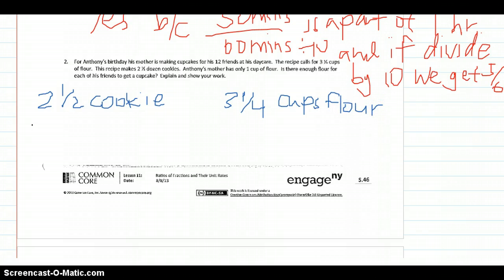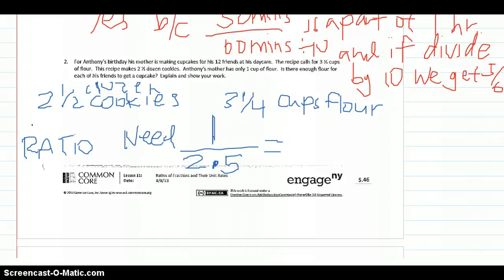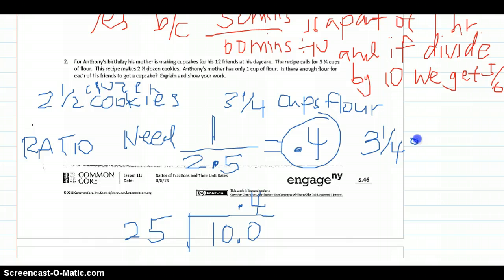We need to make just one dozen. We can make two and a half dozen, but we only need one dozen. So the ratio that we're going to create is that we need one dozen out of the 2.5 dozen cookies. If I take my calculator and divide one with 2.5, I'm going to move my decimal once. What I will get is 0.4. So I need 0.4, or 40% of the cup of flour that is total. I'm going to take 3 and a quarter and multiply that by 0.4.